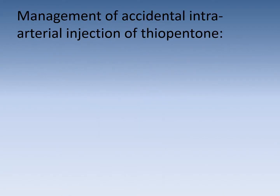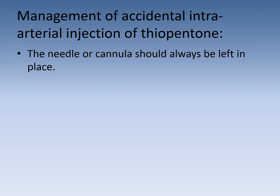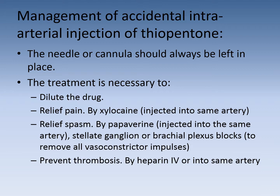Management of accidental intra-arterial injection of thiopental: the needle or cannula should always be left in place — this is a rule we should never forget — because we are going to give drugs through that cannula. If we remove it, we will not be able to locate the artery again as it will go into spasm. Treatment includes: dilute the drug by injecting fluid through that cannula; relieve pain by xylocaine injected into the same artery; relieve the spasm by papaverine also injected in the same artery, or perform stellate ganglion or brachial plexus block to remove all vasoconstrictor impulses; and prevent thrombosis by heparin IV or injected into the same artery.